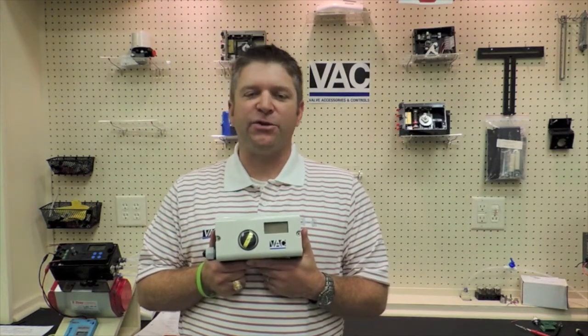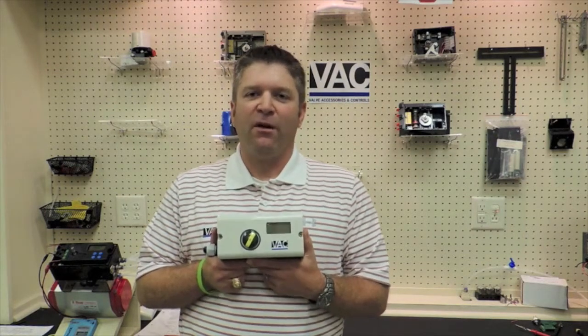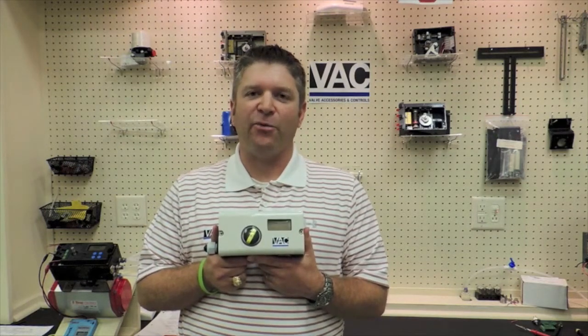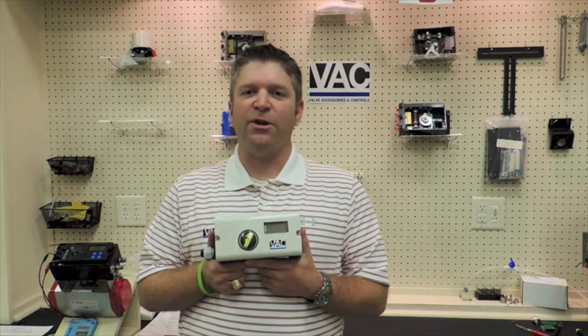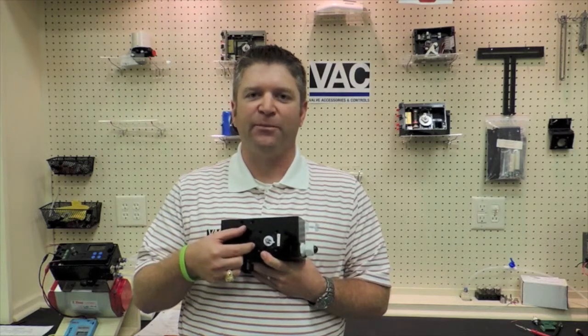The first thing that we'll need to do is determine what kind of mounting kit we're going to use on a rack and pinion actuator. Today we're going to be using a simple ISO mounting bracket. The second thing we need to determine is how we're going to mount this positioner onto the actuator.